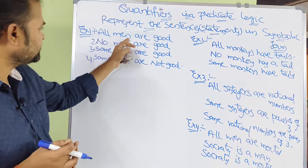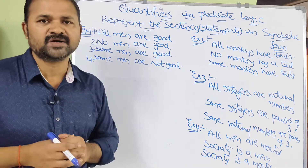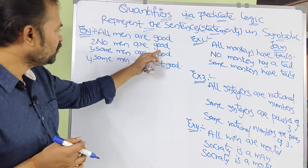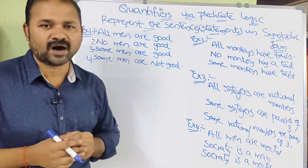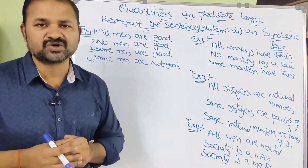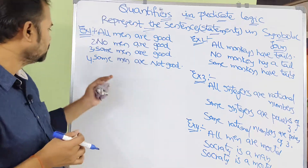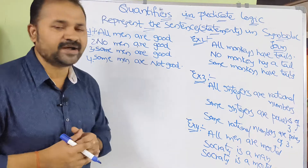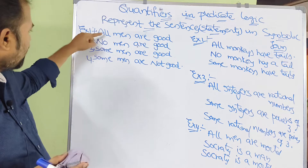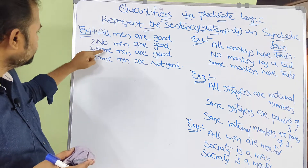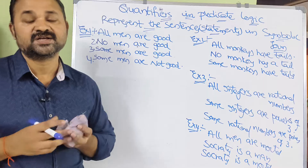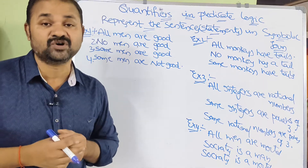If we observe the sentences, the words All, No, and Some are nothing but quantifiers — quantifier keywords. We also need to observe the predicates. Here, 'men' is a predicate and 'good' is a predicate.